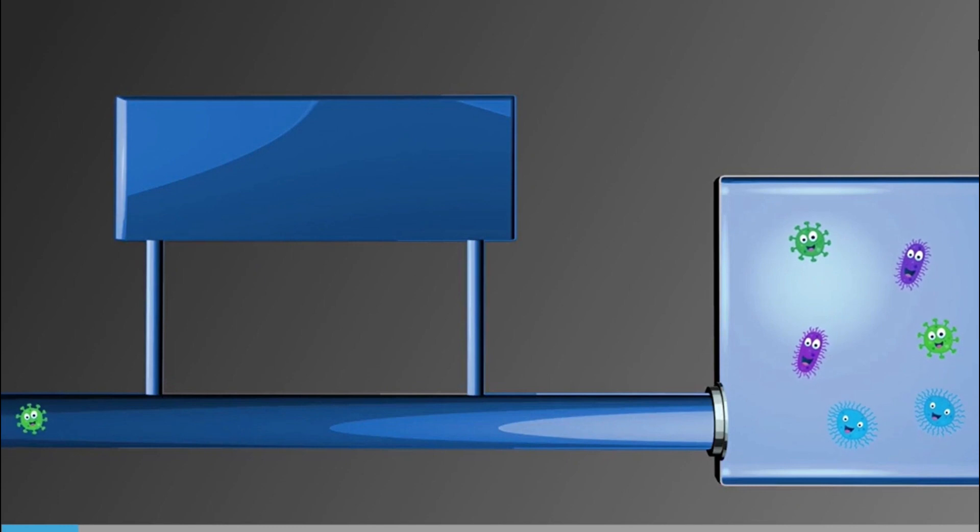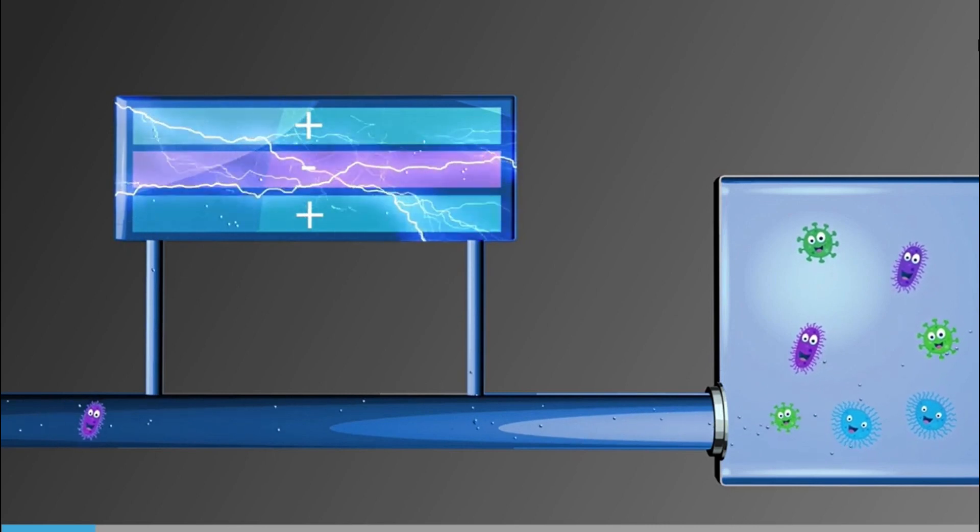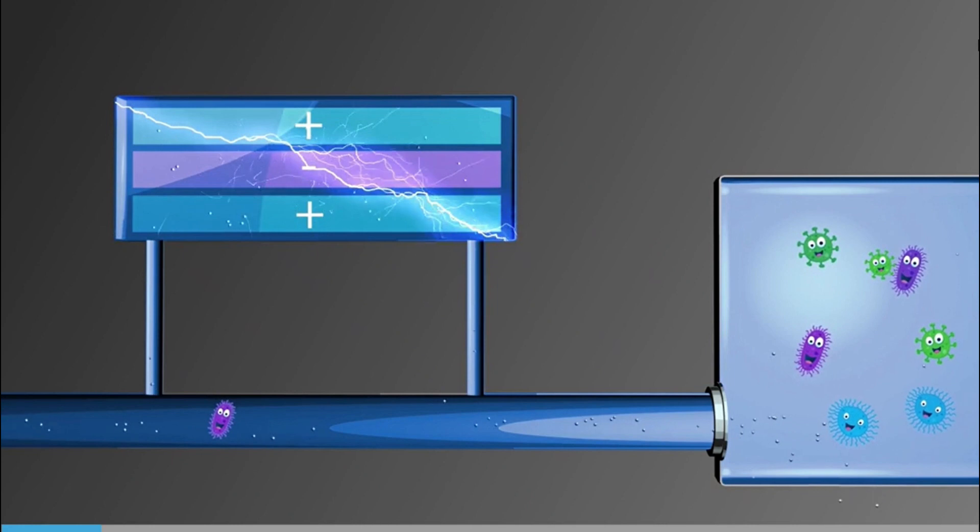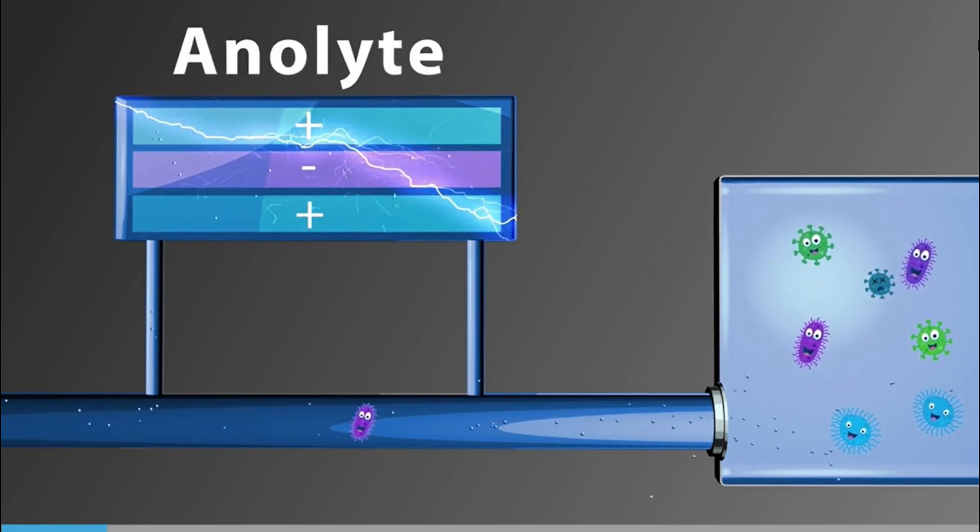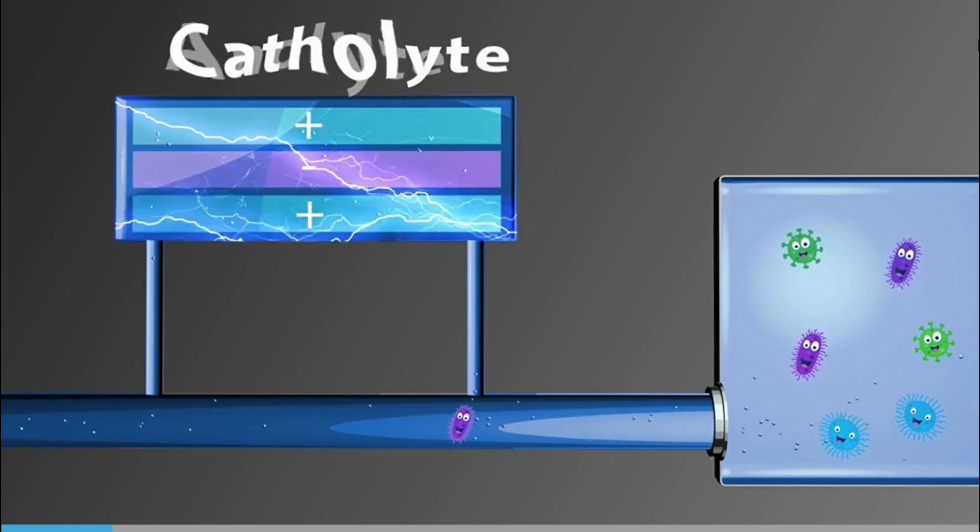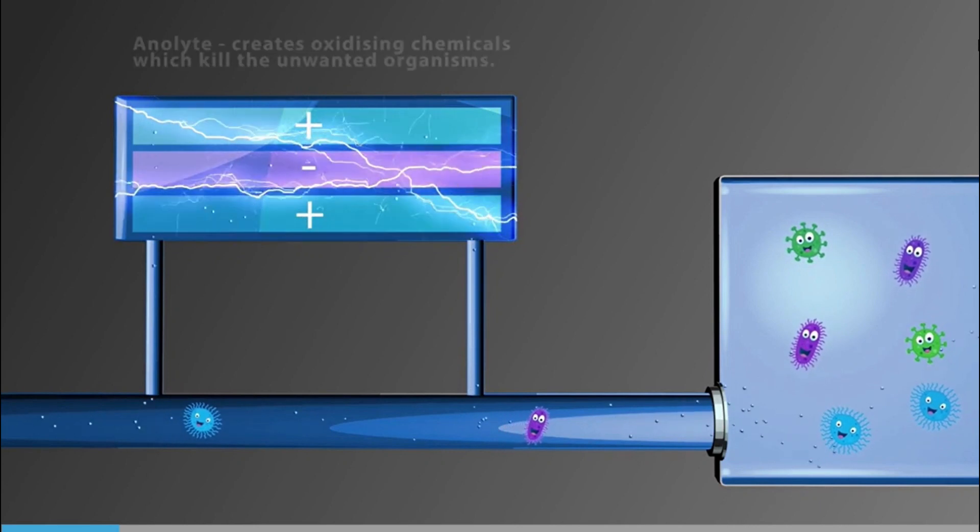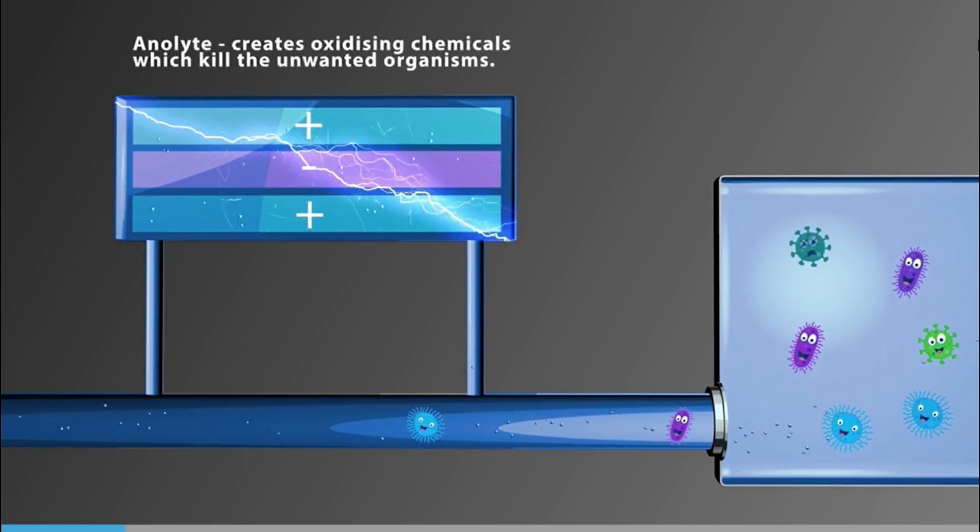In an electrolysis system, an oxidizing disinfectant can be produced in a process known as water activation. An electric current is applied to water in an electrolysis chamber. The water is broken down into an acidic biocide known as anolyte and an alkaline substance known as catholyte. The anolyte is injected into the ballast water where it creates oxidizing chemicals which kill the unwanted organisms.